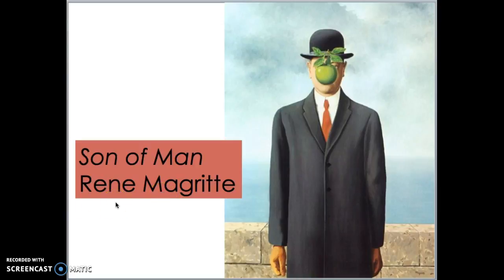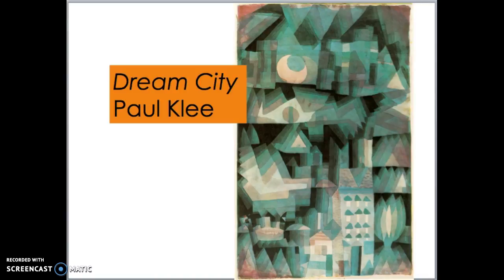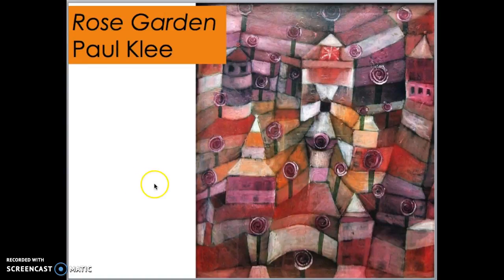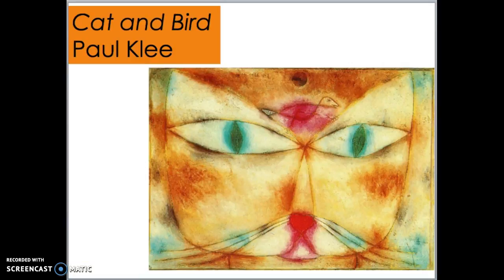Magritte's paintings are kind of hard — when you see Paul Klee's paintings, you're going to be so grateful. Red Balloon — got it. Dream City — very dreamy. The Rose Garden — kind of these lollipop roses by Paul Klee. Castle and Sun — pretty direct titles. And Cat and Bird by Paul Klee. Got to love his titles: straight to the point.